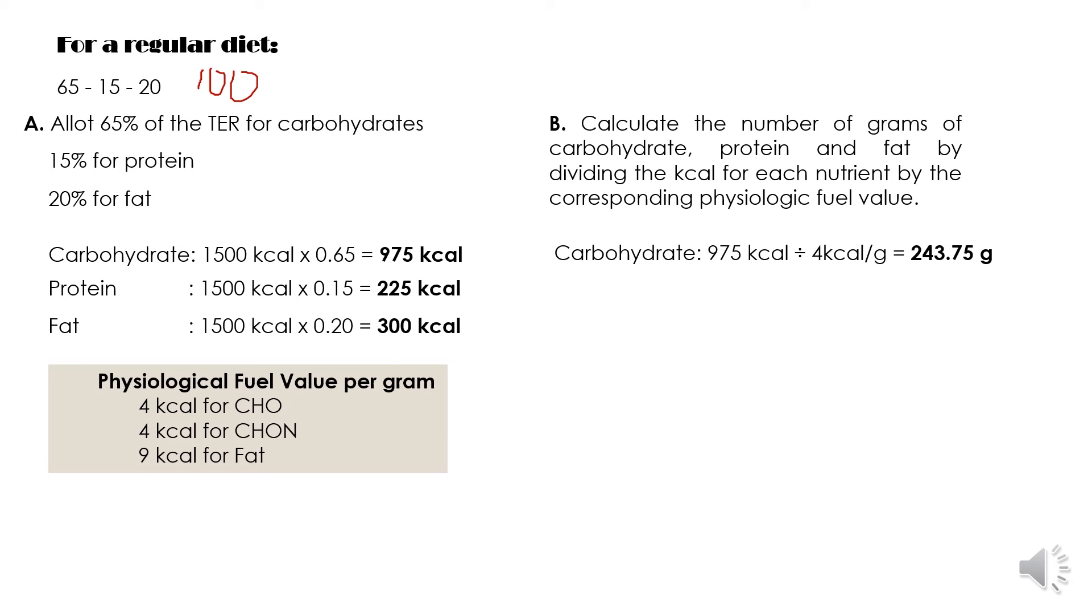So let's start: carbohydrates equals 975 kilocalories divided by 4 kilocalories equals 243.75 grams. For the protein 225 divided by 4 equals 56.25 grams.